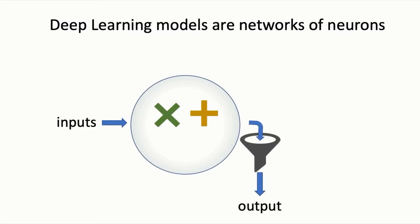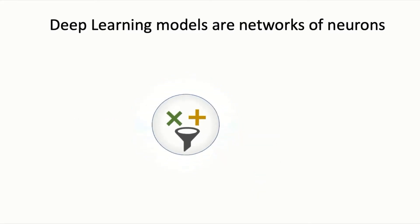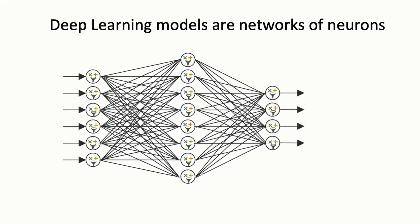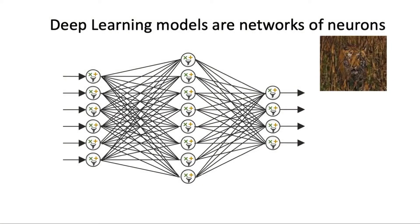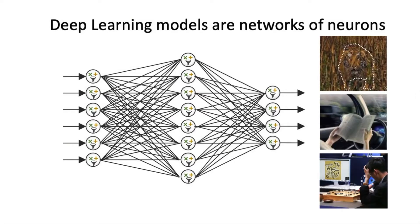These simple computations of many individual neurons are combined into large, coordinated neural networks that achieve the human-like results we find so remarkable, including recognizing images, driving cars, and beating world champions in games.